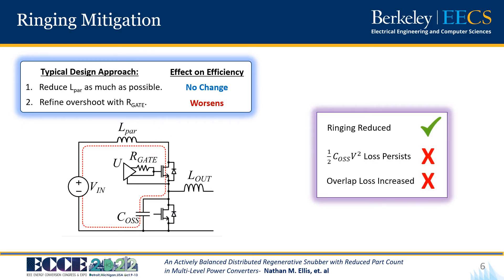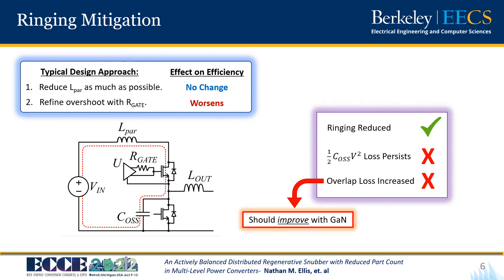To summarize this approach: we can address our overshoot, but we are still burning one-half CV² of energy every switching cycle and our overlap loss is degraded as a result of an increased R_gate value. To add insult to injury, this overlap loss is made to seem even worse due to the fact that we now have access to incredibly fast gallium nitride switches that would be restricted to operate much slower than their achievable switching speeds. So can we do better?